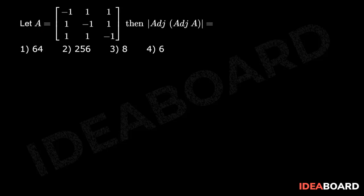Let A equal to the matrix: minus 1, 1, 1, 1, minus 1, 1, 1, minus 1. Then find the determinant of adjoint of adjoint A.